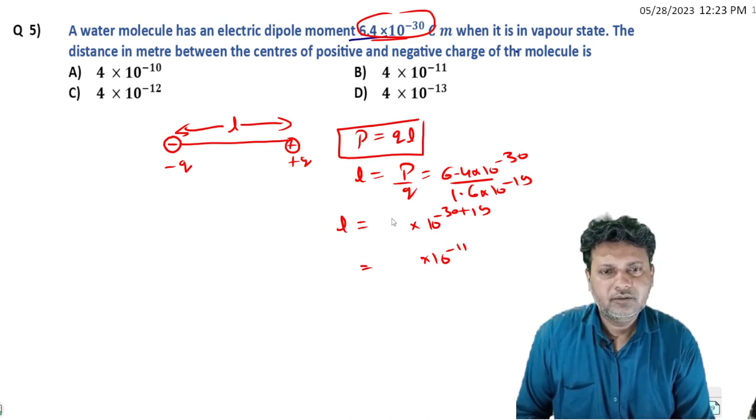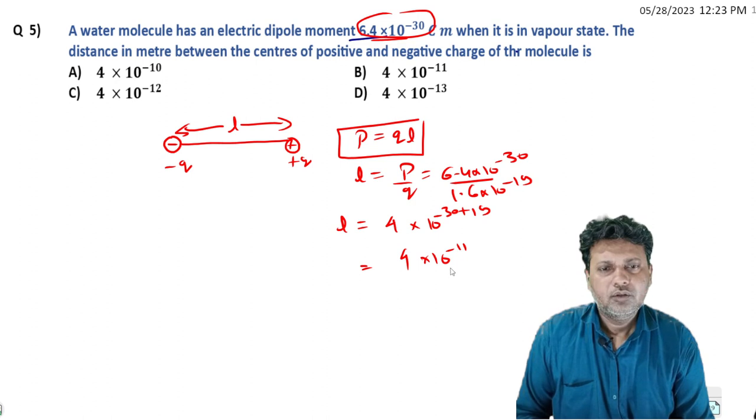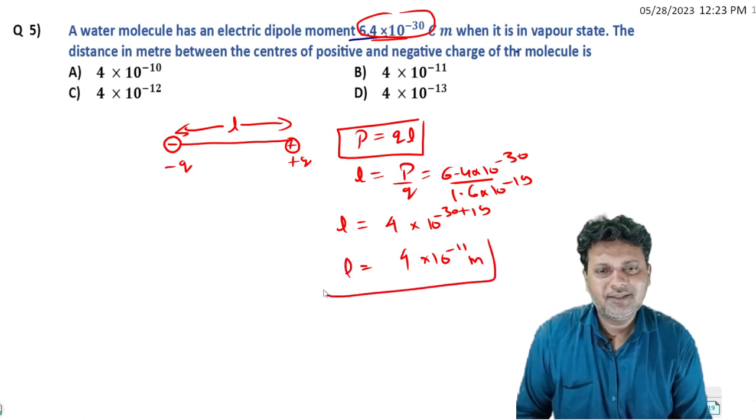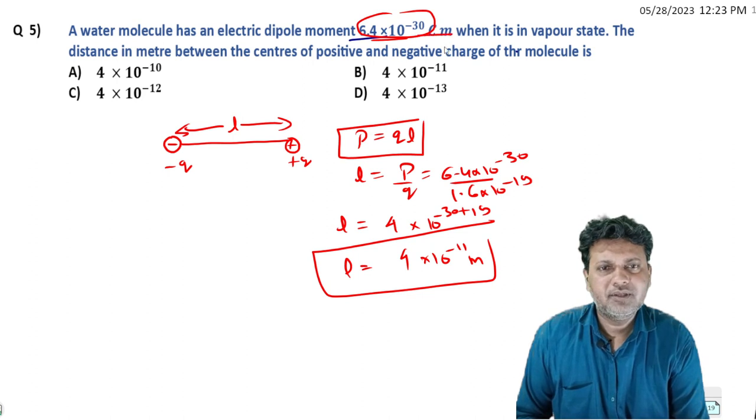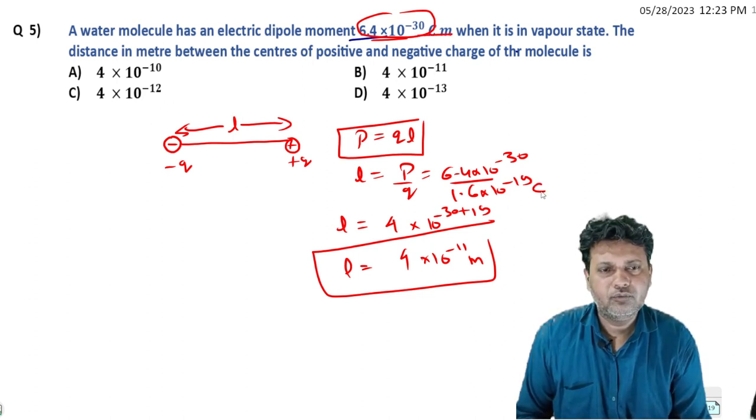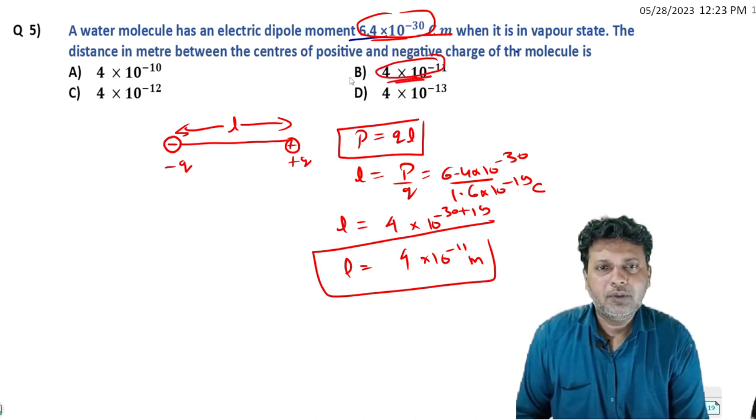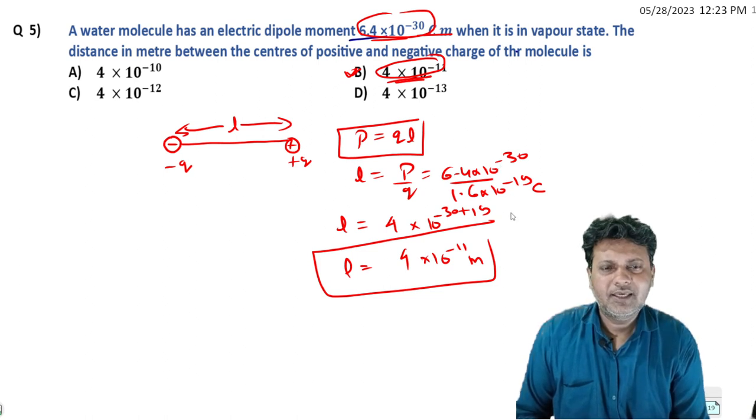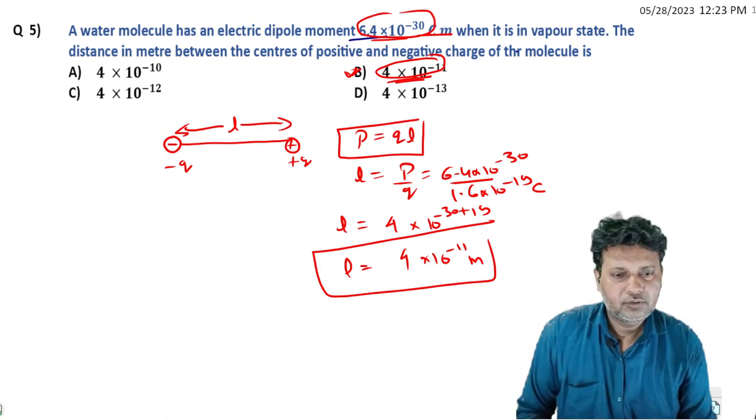equals 4×10^-11 meters. So the answer is 4×10^-11 meters. So next question.